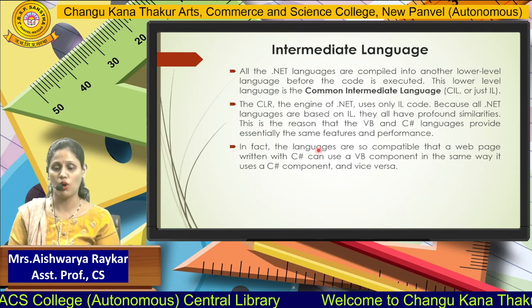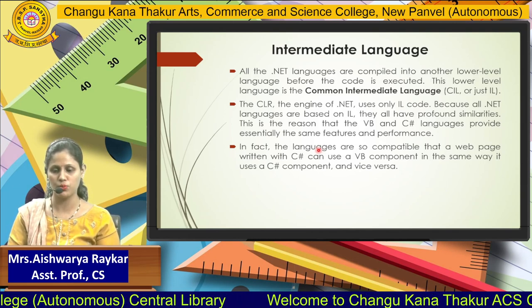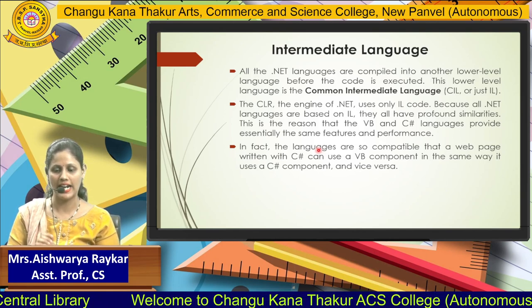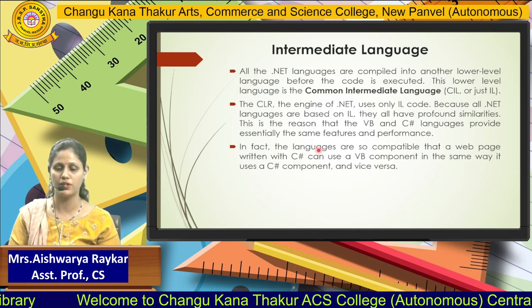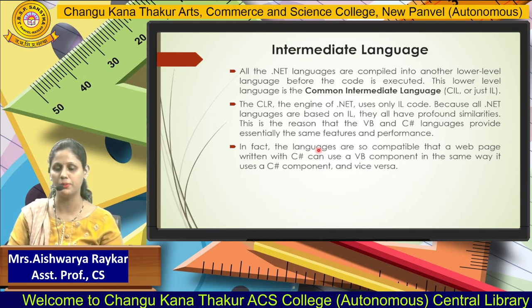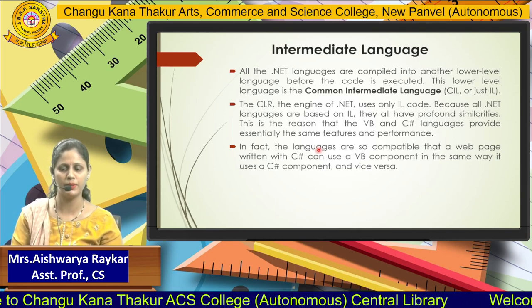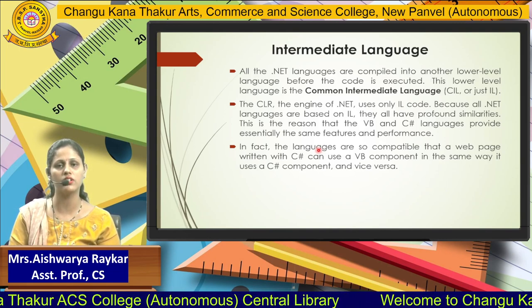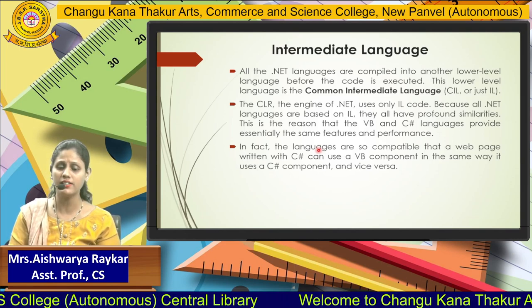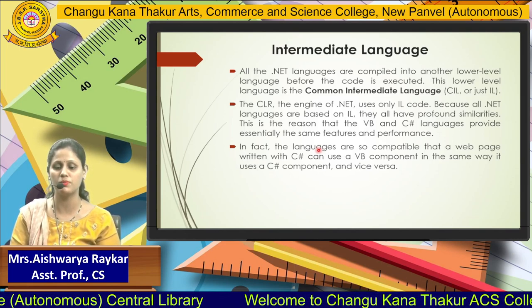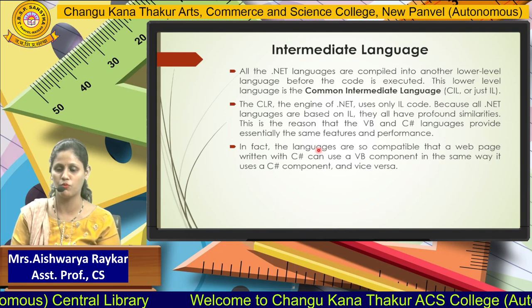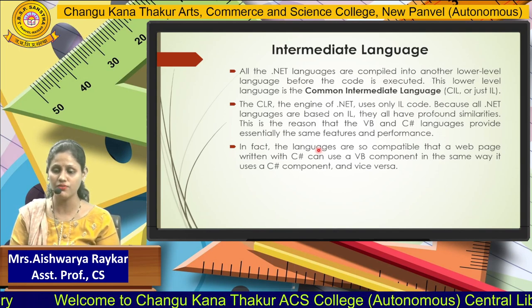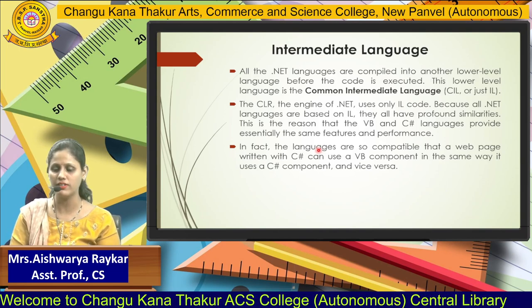Whenever the .NET code is supposed to be executed, first it will be compiled into a lower level language, and that lower level language is nothing but the Common Intermediate Language, or simply IL, that is Intermediate Language. Our CLR is the engine of .NET — it will be executing all the .NET programs. Because all the .NET languages are based on IL itself, they all have profound similarities.